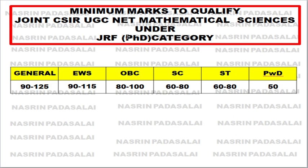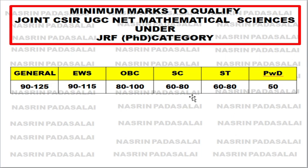If you belong to the General category, the safest mark is 90 to 125 out of 200. For EWS category, it is 90 to 115 marks. For OBC category, the safer mark is 80 to 100 — if the question paper is very hard, target 80 marks; if it is easy, target 100 marks. For SC or ST category, 60 to 80 marks — even 70 marks is fine. Note that these ranges will change every year as more students become aware of this examination and as NTA sets tougher question papers in coming years.